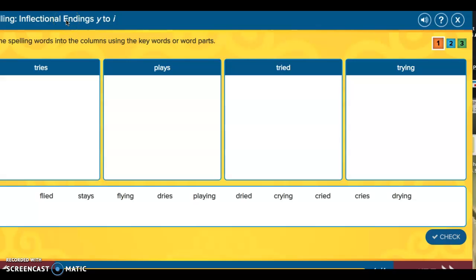Your spelling words for this week are words that end with Y, and when do we change them to I? So we have a few words at the top: tries, plays, tried, and trying. You're going to sort your spelling words down below in the word box. This is the first level. Let's say I sort. I click and move drawing because it ends with ing and it still has the y.